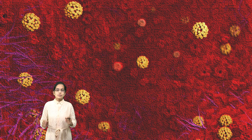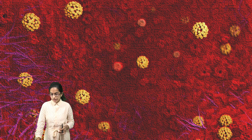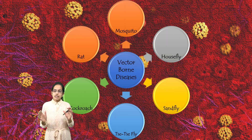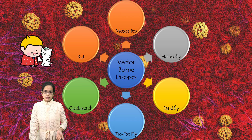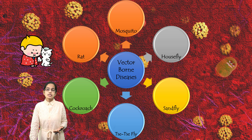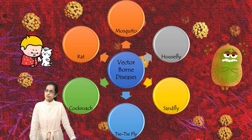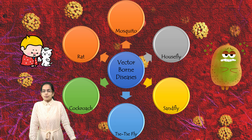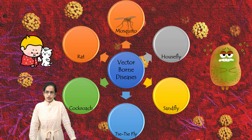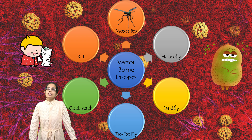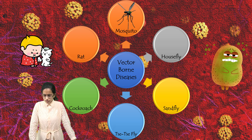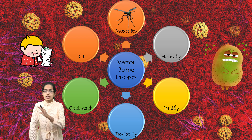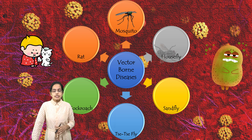Today we would be talking about some of the major vector-borne diseases. There are various vectors that cause diseases, leading to sickness — high fever, chills, and different symptoms for different diseases. The first vector we talk about is mosquitoes, the most common ones and the most prevalent, specifically in the tropical nations.